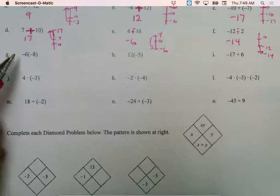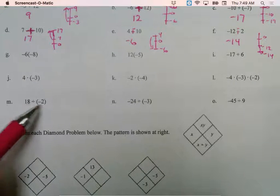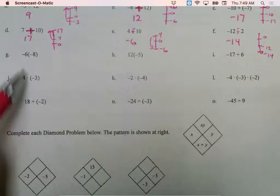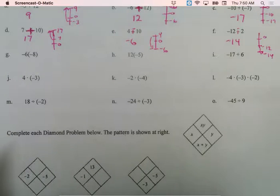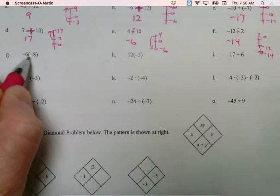If the factors or the two numbers in the division problem have different signs, your answer is going to be negative. If they have the same sign, your answer is positive.